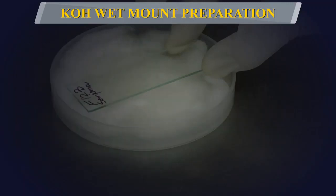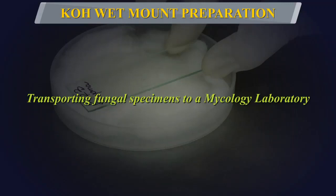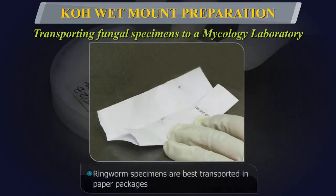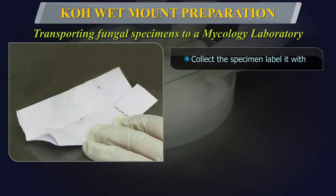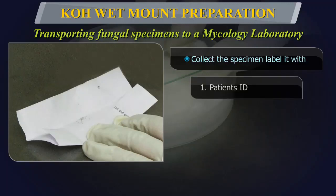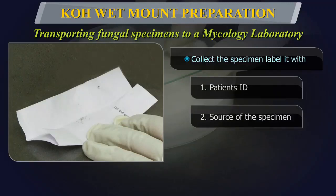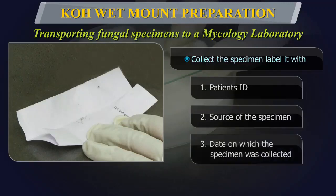The fluorescent distorted hair should be plucked and examined. Ringworm specimens are best transported in paper packages rather than screw-capped containers, as this helps reduce humidity and bacterial multiplication. Collect the specimen on clean paper, fold it securing the specimen, and label it with the patient's name, ward number, source of specimen, and date collected.